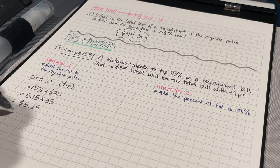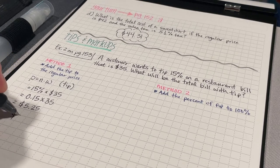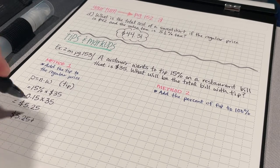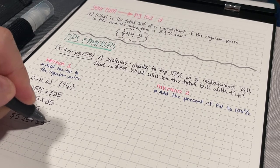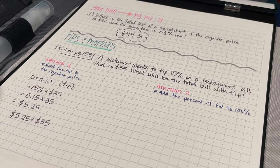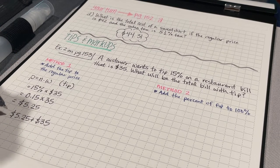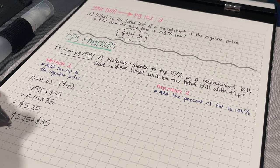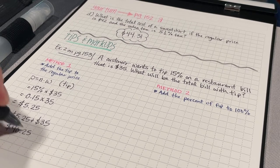Now, I need to take that $5 and 25 cents and add it on to the original bill, which was $35. So, the total cost of this meal at the restaurant is going to be $40 and 25 cents.